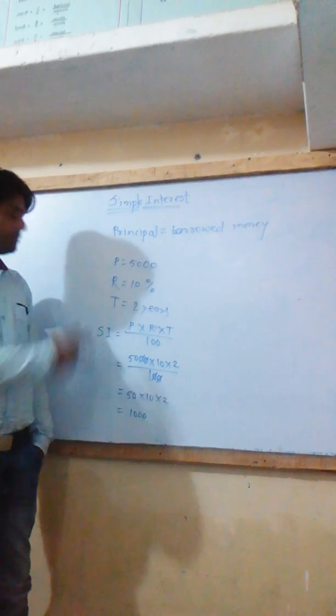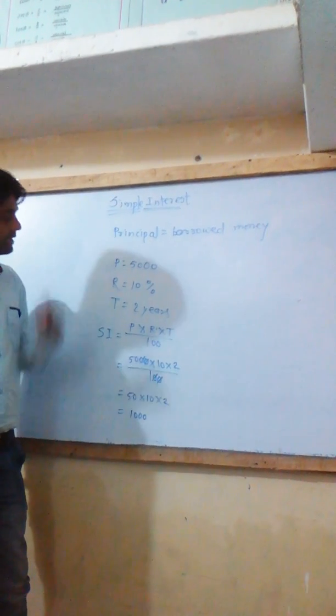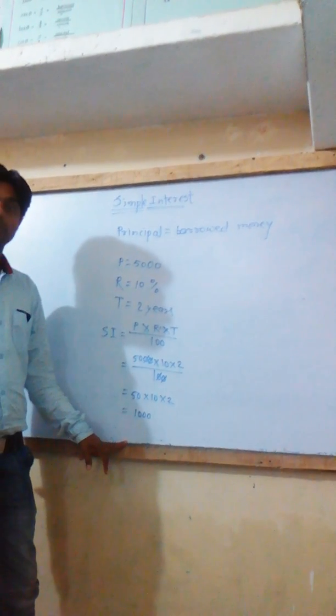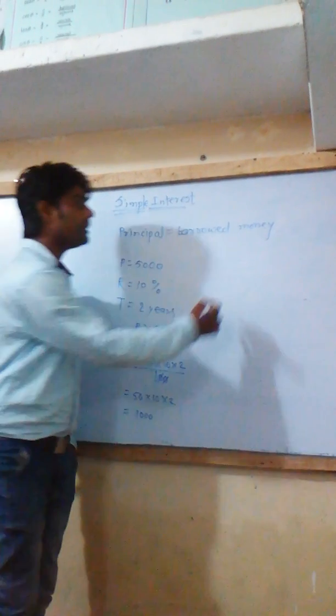So we have calculated simple interest on the borrowed money at the rate of 10% for 2 years is 1,000 rupees. Now what will be the amount?